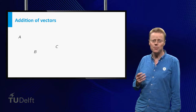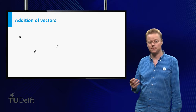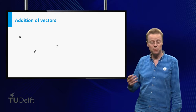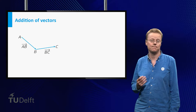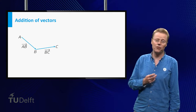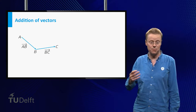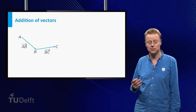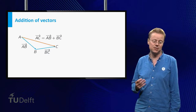Consider three points in the plane: A, B and C. Construct vectors AB and BC. The sum of these is then obtained by following the two arrows, first AB and then BC. This gives you AC.